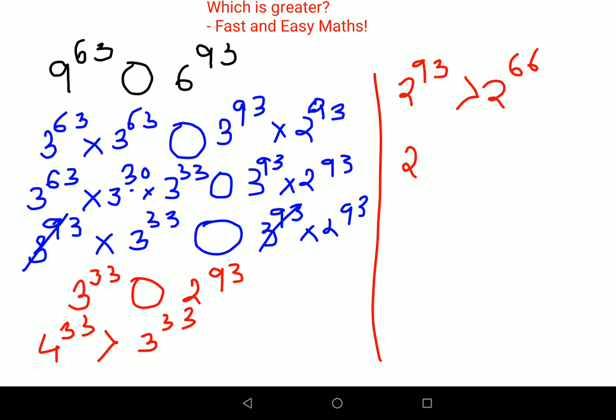Because 2 raised to 93, if I take 2 squared out, I'm left with 33. So 2 squared is 4 raised to 33, and 2 raised to 93 is greater than 4 raised to 33. We know that 4 raised to 33 is obviously greater than 3 raised to 33.